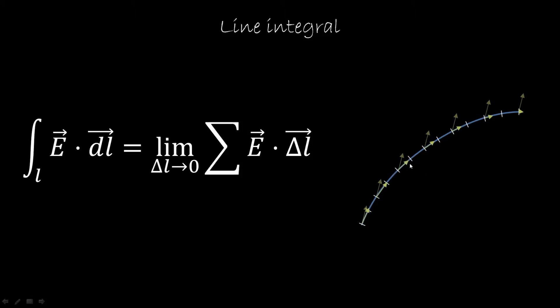And then we take the limit where the pieces of line are smaller and smaller and smaller, so that we approach the actual curve. And this is, of course, the definition of a line integral. So for example, if E was a force field, the line integral would tell us the work of that force along that path. If E was a field of the velocity of a fluid, it would tell us how much fluid is flowing along that path.